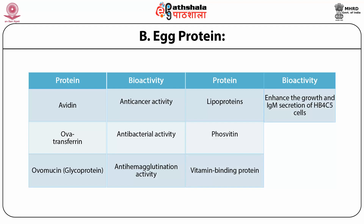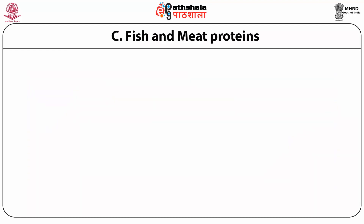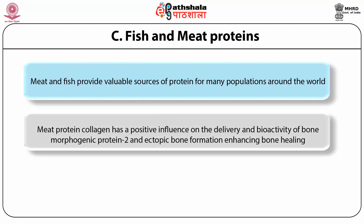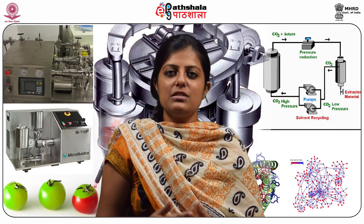Phosphorbitin has metal chelation activity and also antioxidant activity. The last animal source is fish and meat proteins, which provide a valuable source of protein for many populations around the world. Certain meat proteins have important physiological activities. For example, collagen has a positive influence on the delivery and bioactivity of bone morphogenic protein 2 and ectopic bone formation, enhancing bone healing. Fish collagen protein, when orally administered, can repair damaged cartilage and can have synergistic effects with N-acetyl glucosamine.